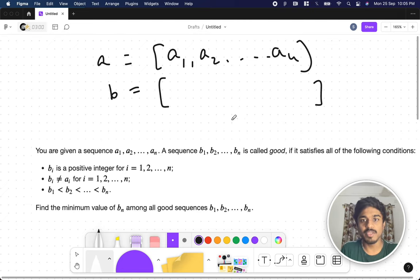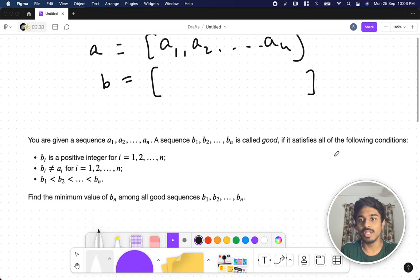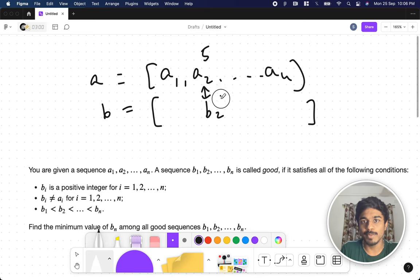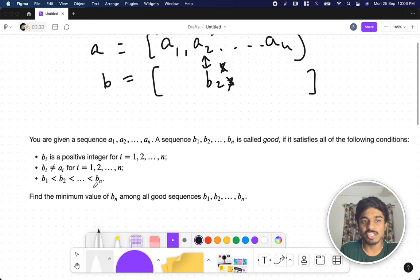And they're telling that a sequence b, where this is array a and this is sequence b (b1, b2, ... bn), is called good if it satisfies all the following conditions: bi is a positive integer for each index, bi is not equal to ai (meaning if a2 is 5, b2 cannot be 5), and it should always be a strictly increasing sequence like 1, 2, 3, 4, 5. There should not be less than or equal to, it must be strictly increasing.